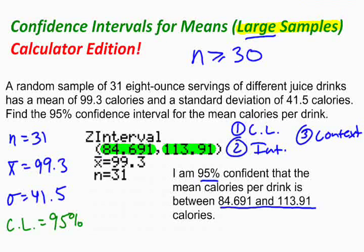So hopefully this helps you. And remember, this is for large samples, confidence intervals for means, when you have a large sample. And this is how to find it using the calculator. You should be able to find the confidence interval by hand and use the calculator as a check.